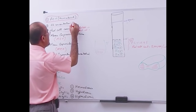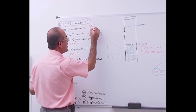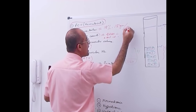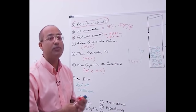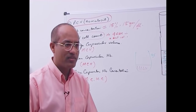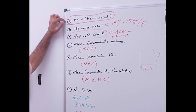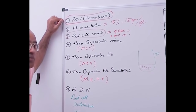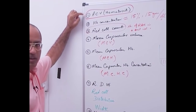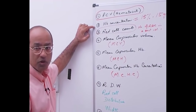In a healthy person — males a little more, females a little less — hemoglobin concentration is approximately 15 grams per 100 mL (per deciliter), or 150 grams per liter. So three terms are now clear: packed cell volume, red cell count, and hemoglobin concentration.